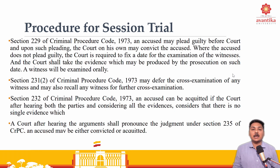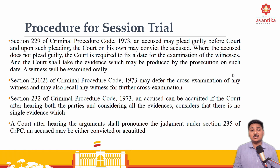Section 229 of CRPC says that an accused may plead guilty before the court and upon such pleading, the court on its own may convict the accused. Where the accused does not plead guilty, the court is required to fix a date for the examination of the witness, and the court shall take the evidence produced by the prosecution. A witness will be examined orally. Section 231 clause 2 of CRPC says that the cross-examination of any witness may also be recalled for further cross-examination. Next, section 232 of CRPC — an accused can be acquitted after hearing both parties and considering all the evidence. Under section 235 of CRPC, the court shall pronounce the judgment, and an accused may either be convicted or acquitted.